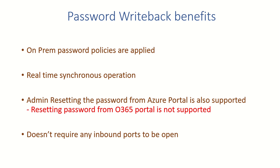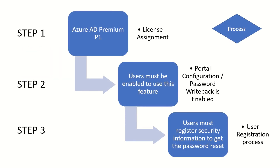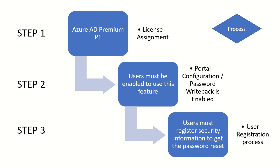The entire self-service password reset process is a three-step process — if any step is missing, SSPR will not work. Step one: ensure all users have Azure AD Premium P1 license assigned. Step two: perform the required configuration on portal.azure.com to enable SSPR and scope it to a specific group, all users, or a subset of users — and also ensure password writeback is enabled on AD Connect for synced identities.